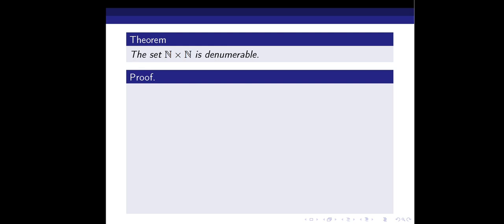First, let us look at the elements of N×N. The elements of N×N are of the form (1,1), (1,2), (2,1), (1,3), (2,2), (3,1), etc. All of them are ordered pairs. In general, the elements of N×N are of the form ordered pair (m,n) where m and n are natural numbers.